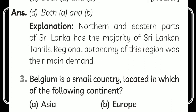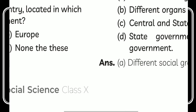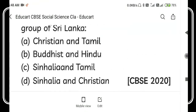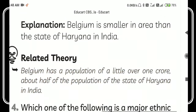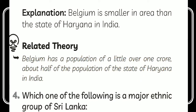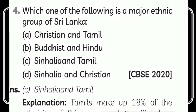The next question is: Belgium is a small country located in which continent? Belgium is located in Europe. Belgium is a smaller area than the state of Haryana in India. Its population is one crore, which is half of the population of Haryana. Belgium has a population of a little over one crore, about half of the population of the state of Haryana in India.